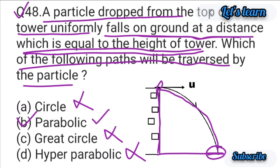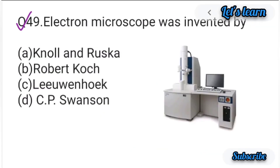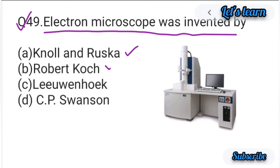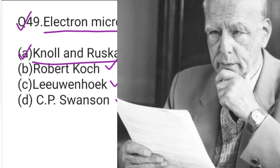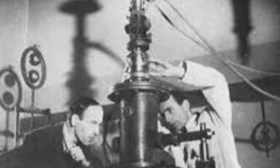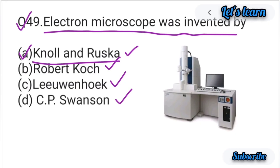Question number 49: The electron microscope was invented by — options are: Knoll and Ruska, Robert Koch, Leeuwenhoek, or C.P. Swan. Option A is correct — Ernst Ruska and Max Knoll. Both together co-invented the first electron microscope in 1931. Option A correct है।